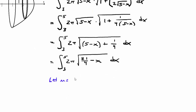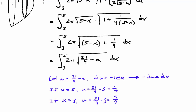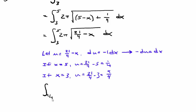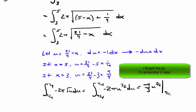This requires a substitution: let u equal 21/4 minus x, so du equals negative dx. Bringing the negative to the left-hand side and changing the bounds — when x equals 5, u equals 21/4 minus 5, which is 1/4; when x equals 3, u equals 21/4 minus 3, which is 9/4. After substitution, we get the integral from 9/4 to 1/4 of negative 2π times root u du, rewritten as u to the positive 1/2. Taking the antiderivative gives negative 4/3 times u to the 3/2, evaluated from 9/4 to 1/4.